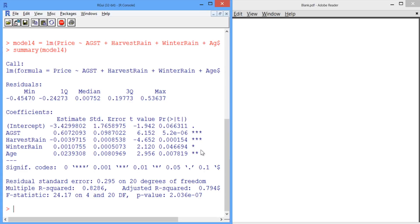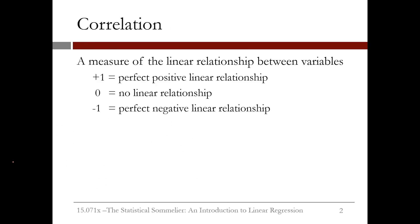Why did this happen? This is due to something called multicollinearity. Age and France population are what we call highly correlated. Correlation measures the linear relationship between two variables and is a number between negative 1 and positive 1. The highest correlation can be is positive 1, which corresponds to a perfect positive linear relationship. The smallest correlation can be is negative 1, which corresponds to a perfect negative linear relationship. In the middle is a correlation of 0, which corresponds to no linear relationship between the two variables.